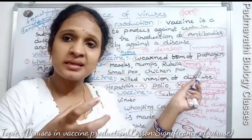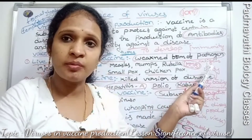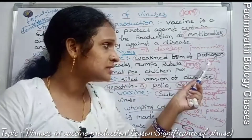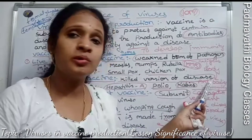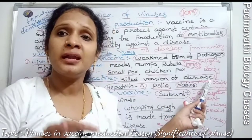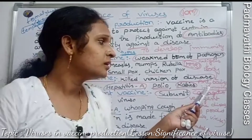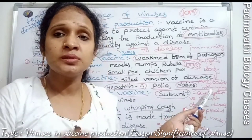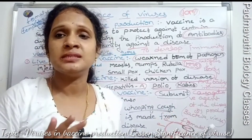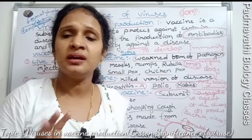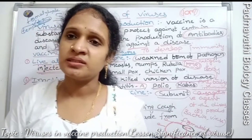The process of vaccination: vaccines act as antigens. Once injected into our body, they immediately produce antibodies. These antibodies develop the immunity system, which helps to avoid and prevent certain diseases. Thank you so much for watching this video.